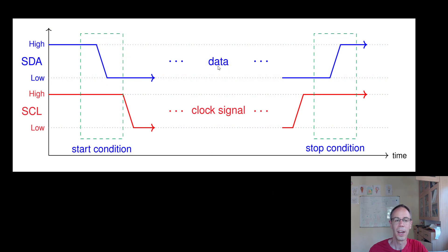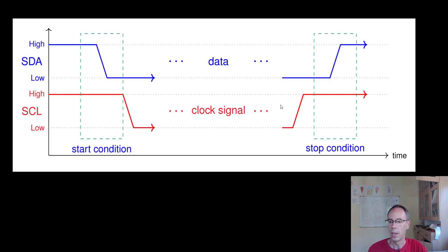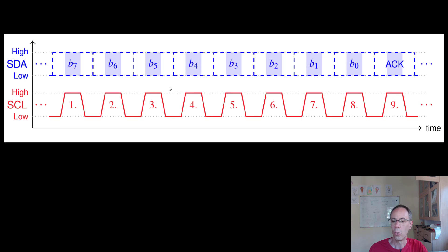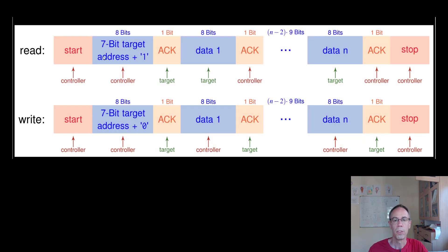I2C is a bus system. We have two lines: one data line and one clock line. Every communication starts with a start condition and ends with a stop condition. The lines are normally pulled up with pull-up resistors. The start condition is when the data line is pulled low, and the stop condition is when the data line is pulled up again. We always send eight bits, or one byte, and the receiver gives us an acknowledgment.